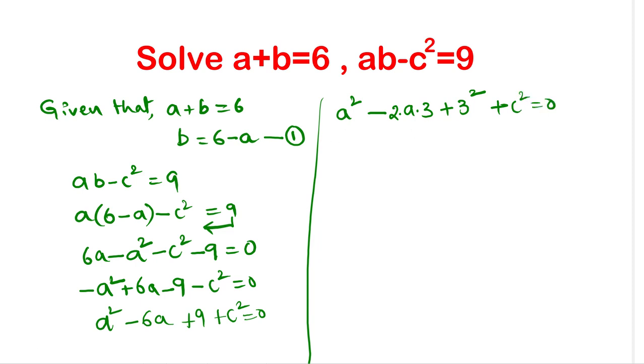Why I wrote this, this is in the form of x squared minus 2xy plus y squared. That is equal to x minus y whole square. Now a squared minus 2a into 3 plus 3 squared is in that form. So we can write this as a minus 3 whole square, then plus c squared equal to 0.